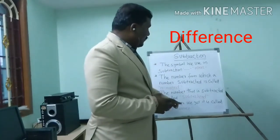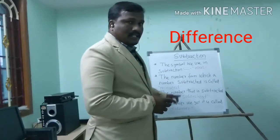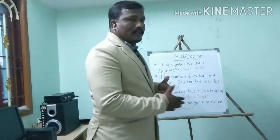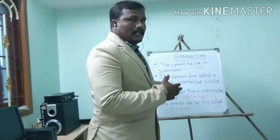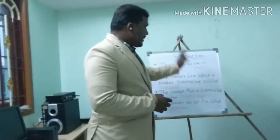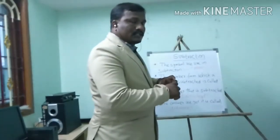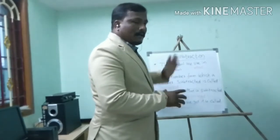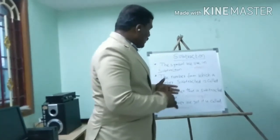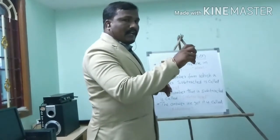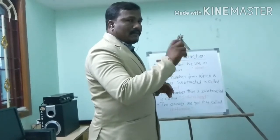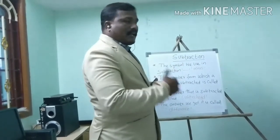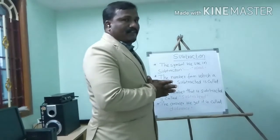So these 3 to 4 important procedures we want to know before going to subtraction sums. So minus — when we subtract, we will use this symbol. Then minuend — the number from which we subtract is called minuend. The number subtracted is called subtrahend. The answer is difference.